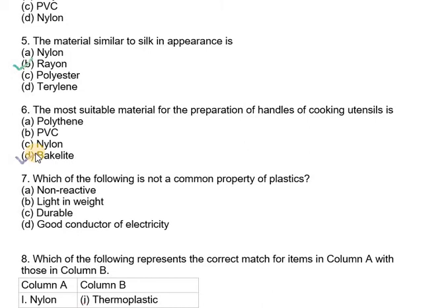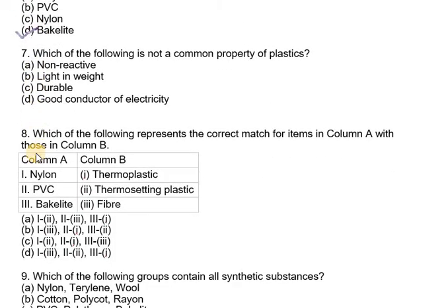Moving on to question number seven, which of the following is not a common property of plastics? Plastics we know are poor conductors of electricity, so the right option out of this is D, that says it is a good conductor of electricity, which is wrong. It is a poor conductor of electricity.